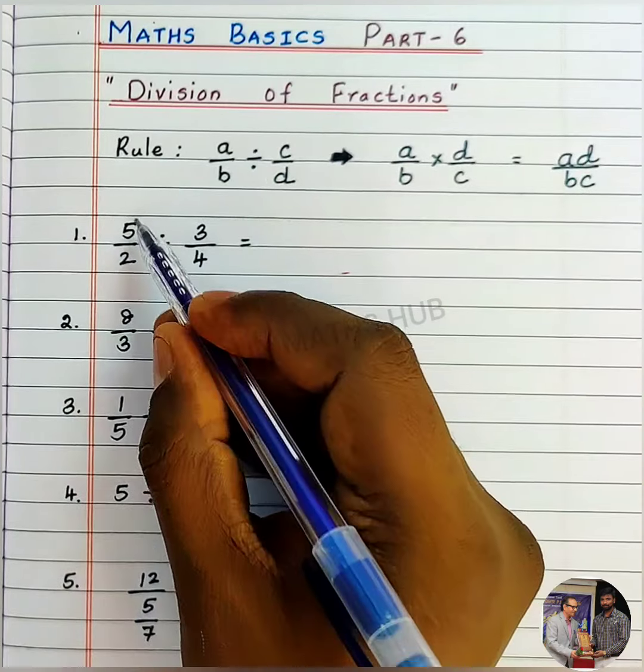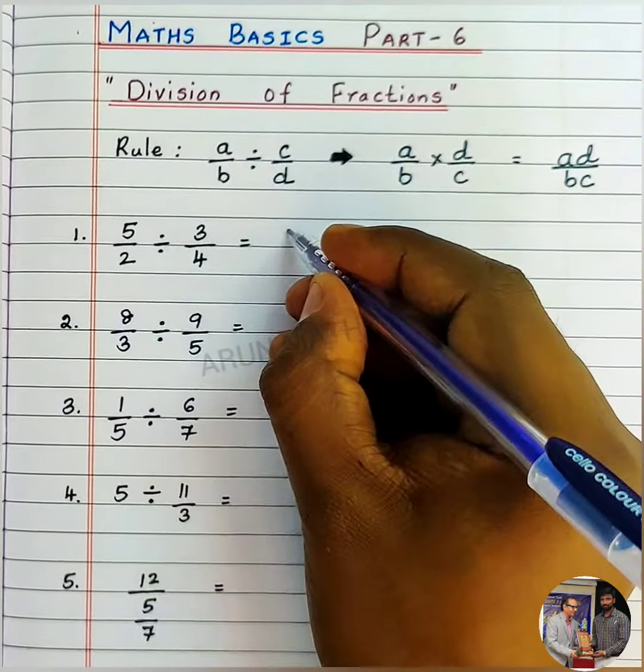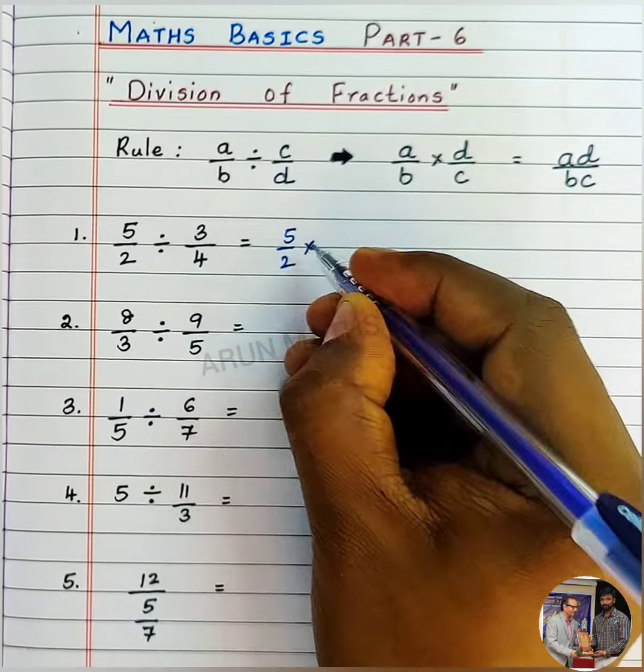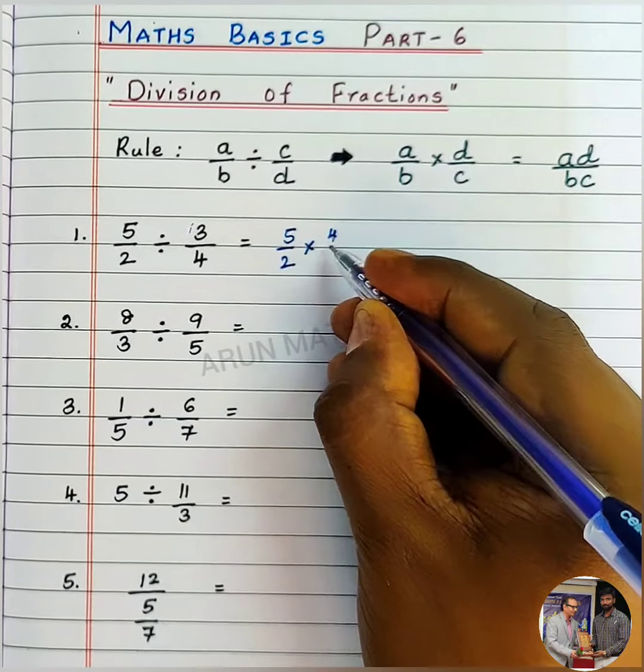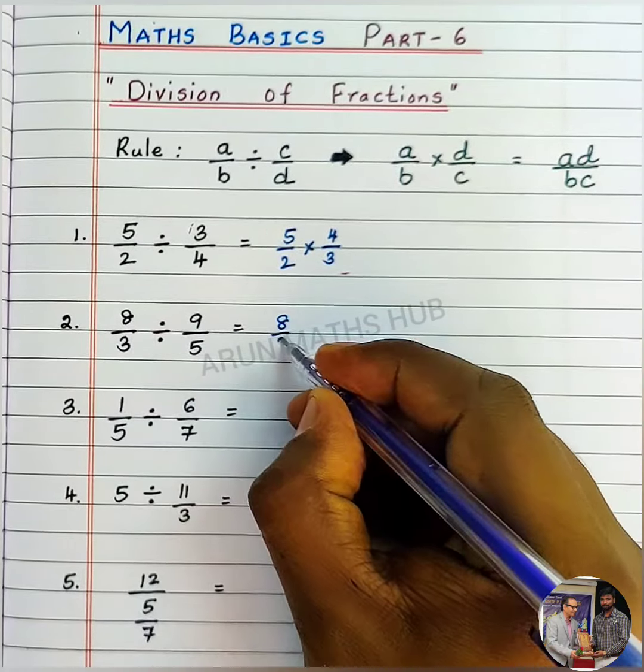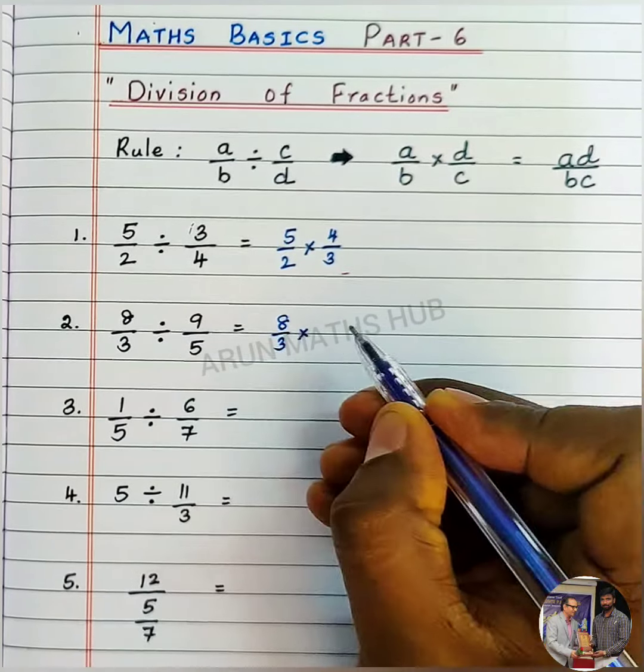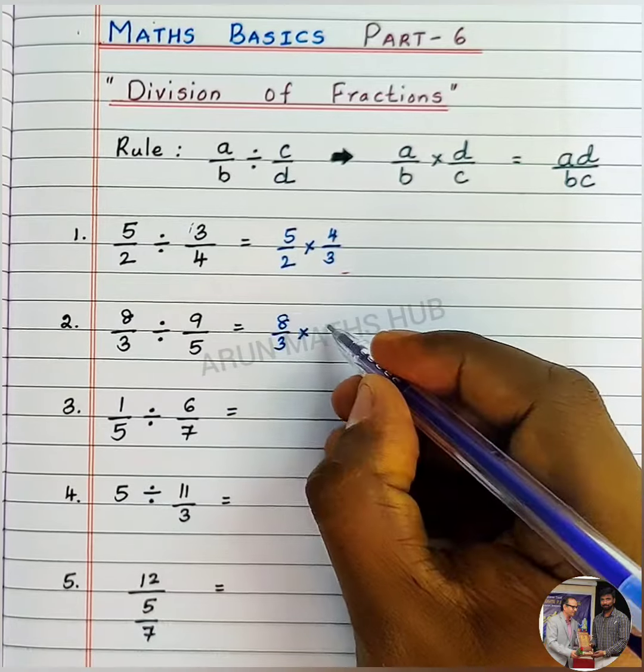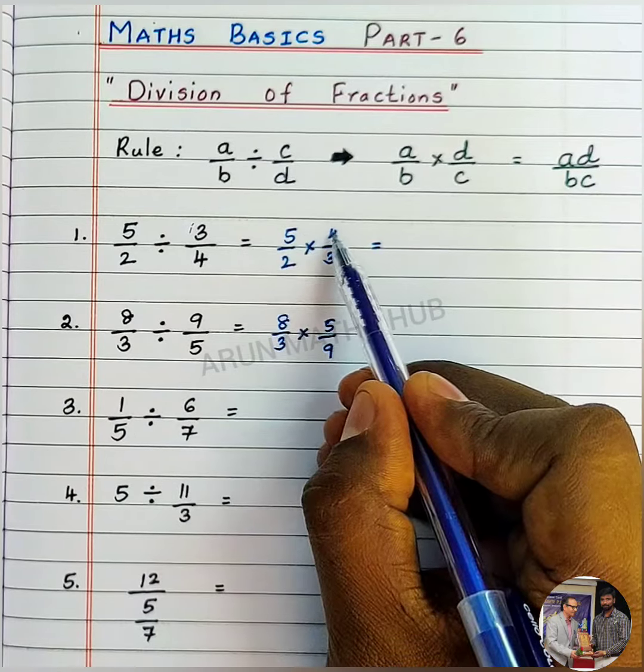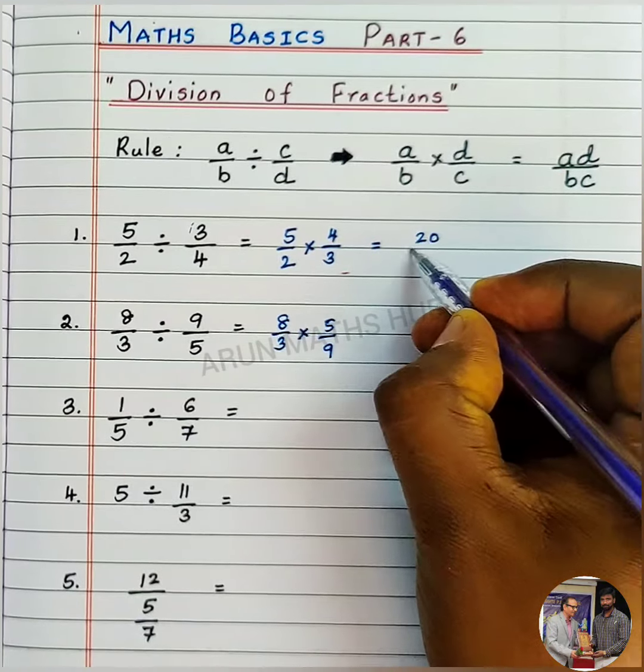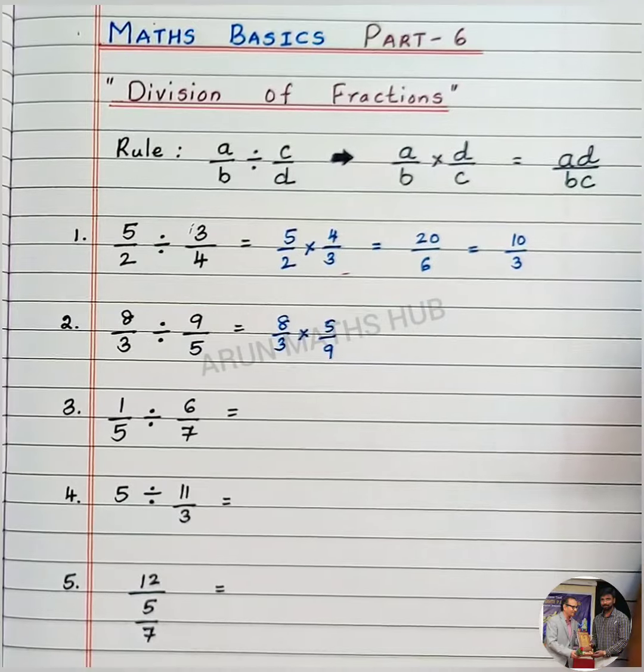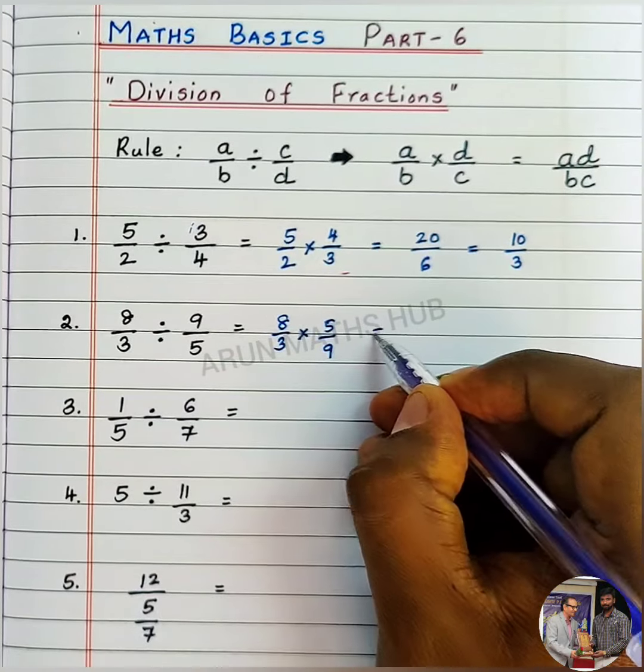Here, 5/2 - that is a/b - division becomes multiplication. Just reciprocal: 3/4 becomes 4/3. Same way, 8/3 division becomes multiplication symbol, 9/5 becomes 5/9. Now numerator times numerator: 5 times 4 is 20 divided by 2 times 3 is 6. What you get? 10/3. Here, 8 times 5 is 40, 9 times 3 is 27.